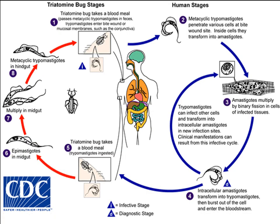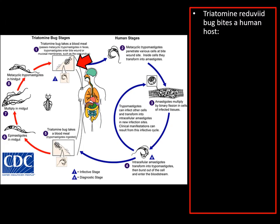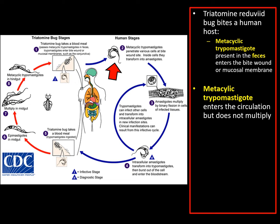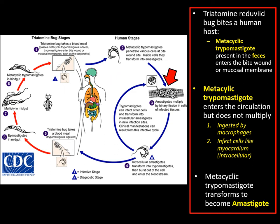The life cycle of Trypanosoma cruzi according to the CDC begins when the triatomine reduviid bug bites the human host while defecating metacyclic trypomastigote in the feces. This infective stage enters the bite wound or mucosal membrane like the conjunctiva. The metacyclic trypomastigote enters the circulation but does not multiply; it can either be ingested by macrophages or infect cells like the myocardium. Intracellularly, metacyclic trypomastigote transforms to become the non-motile amastigote and undergoes replication by binary fission.